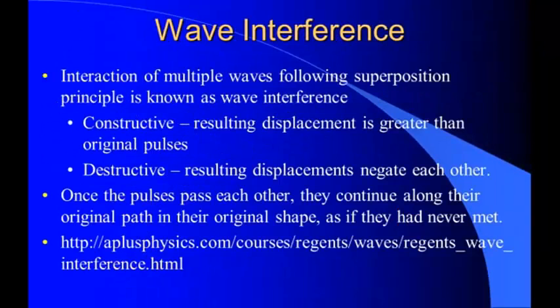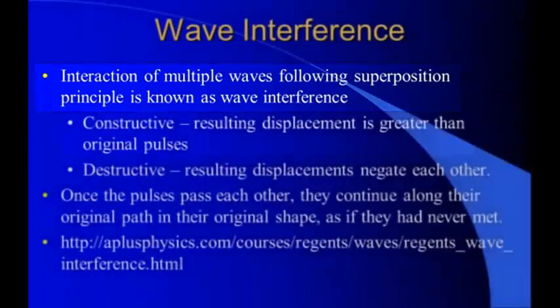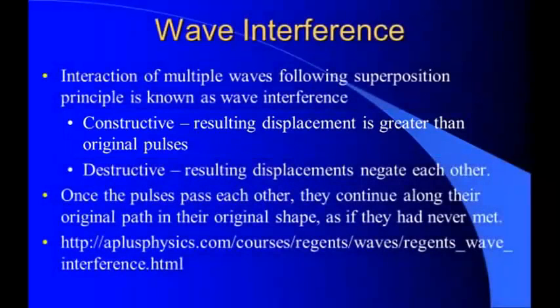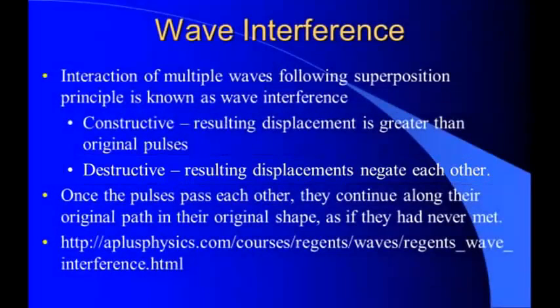Now, applying this to wave interference, the interaction of multiple waves following superposition principle is called wave interference. You can have two types. Constructive wave interference occurs when the resulting displacement is greater than the displacement of the original pulses. We just showed an example. We had a 5 centimeter displacement and a 10 centimeter displacement that added together to give us a 15 centimeter displacement. That's constructive interference.